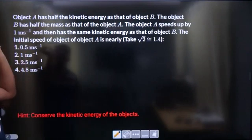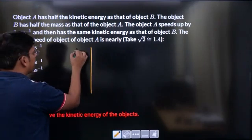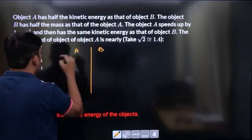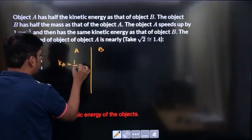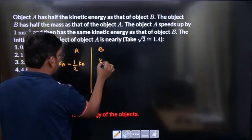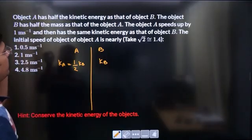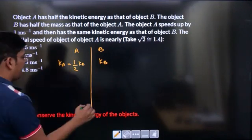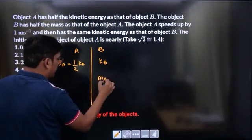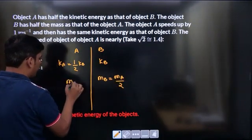Object A has half the kinetic energy as that of object B. This is object A, this is object B. Kinetic energy of object A is half that of kinetic energy of object B, KA equals KB by 2. The object B has half the mass as that of object A.